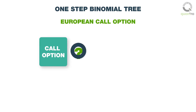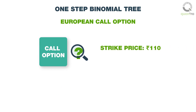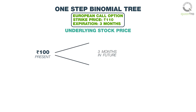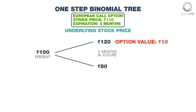We are interested in finding the price of a European call option with a strike price of 110 rupees, expiring in three months. Assume that the underlying stock price is valued at 100 rupees at present. At the end of the three months, there will be two scenarios: either the stock price moves to 120 rupees, which makes the option worth 10 rupees, or the stock price moves to 80 rupees, in which case the option expires worthless.